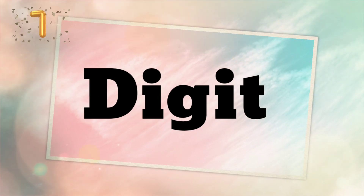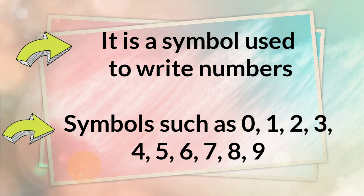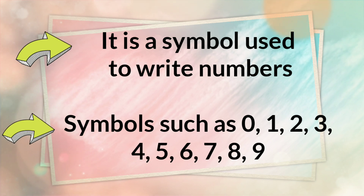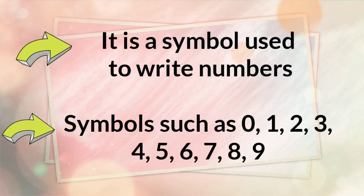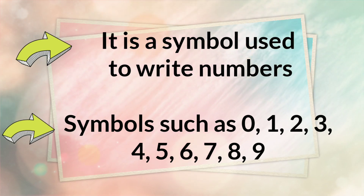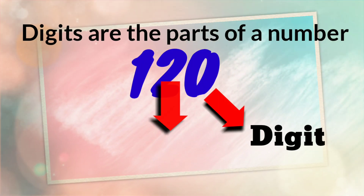Let's have the first word: digit. Do you know what it is? A digit is a symbol used to write numbers. The symbols are zero, one, two, three, four, five, six, seven, eight, and nine. We can form a number using one or more digits. That is why digit is very important, since digits are the parts of a number.